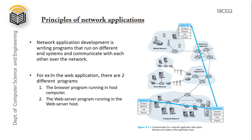Whenever we develop a network application, we develop two programs that run on two different end systems and communicate with each other over the network. For example, in the web application, there are two different programs — one program runs on the browser and another in the web server.